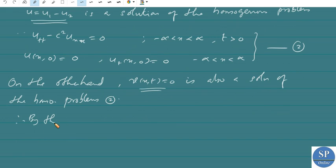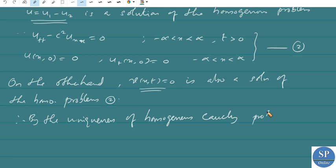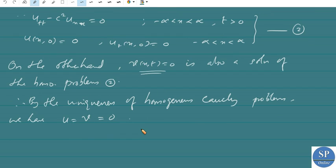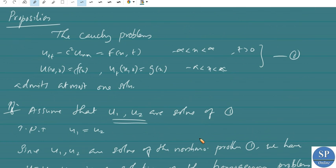By the uniqueness of the homogeneous Cauchy problem for the wave equation, we have u of x t equal to v equal to 0. Therefore, u equal to 0 means u1 minus u2 equal to 0, which implies u1 is equal to u2. So if u1 and u2 are solutions of this non-homogeneous Cauchy problem, then u1 equals u2. Therefore, for the non-homogeneous Cauchy problem, if the solution exists, it is unique.